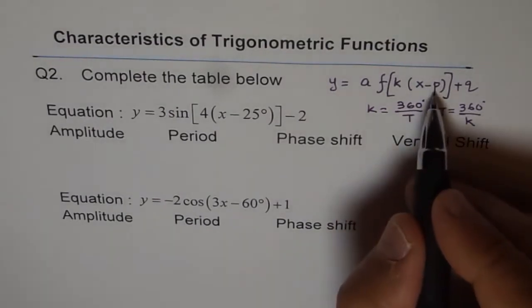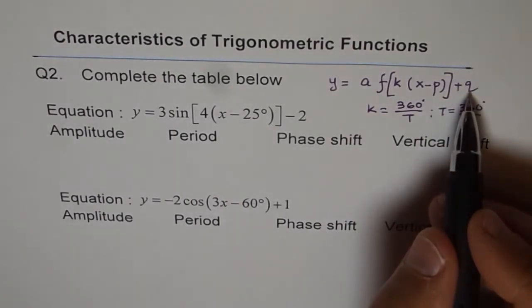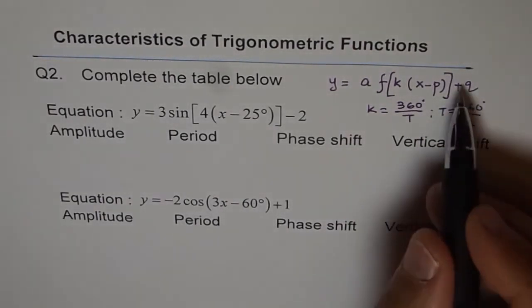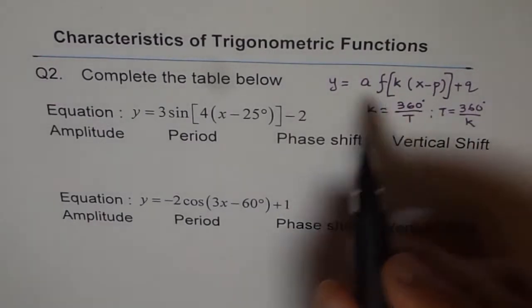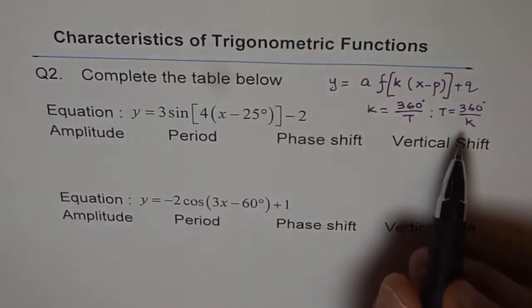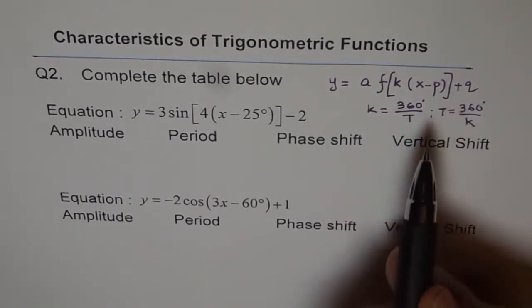P is the phase shift. So you can read from here phase shift is 25, and q is vertical shift. So vertical shift is q from this equation. So answering this question is literally reading the equation in the right order. That is what it is.